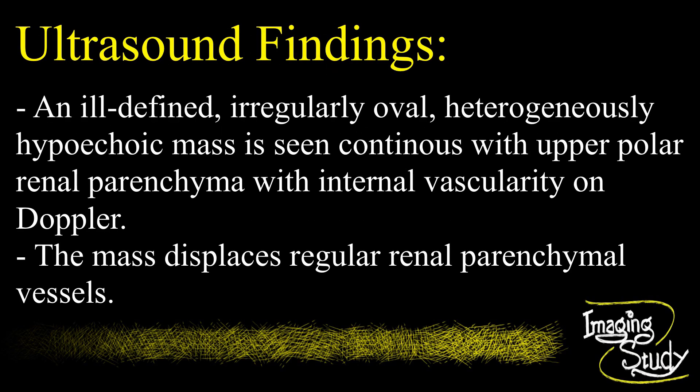an ill-defined, irregular, heterogeneously hypoecogenic mass is noted at the right renal upper polar region. The mass is continuous with the renal parenchyma, suggesting a renal parenchymal mass. On color Doppler, vascularity is noted within the mass, and the mass displaces the regular renal vessels.